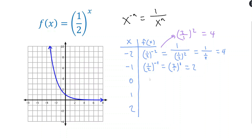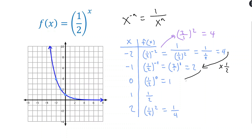Anything to the zero power is 1, and anything to the first power is itself. For (1/2) squared: 1/2 times 1/2 equals 1/4. So our points are: negative 2→4, negative 1→2, 0→1, 1→1/2, 2→1/4. These align with the graph, and we can see the function is decreasing — not only decreasing but decreasing exponentially, with a multiplicative factor of 1/2, which corresponds to the base.